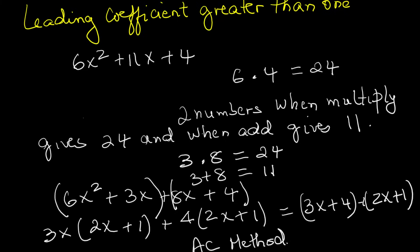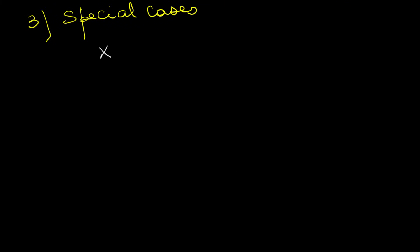Part three, special cases. Now let's cover some special patterns you can recognize instantly. First, the difference of squares. For example, x squared minus 25. This factors into x minus 5 times x plus 5.